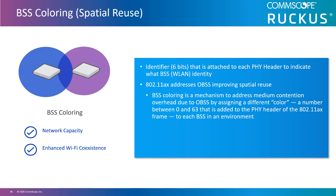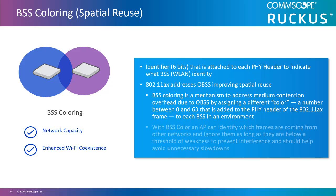This mechanism, originally introduced in 802.11ax, known as spectralization, was published in 2017 and was designed to address the medium contention overhead due to OBSS. 802.11ax assigns a different color — a number between 0 and 63 — which is added to the PHY header of the 802.11ax frame to each BSS in the environment. With BSS color, an AP can identify frames coming from other networks and ignore them as long as they are below a threshold of weakness, cutting down on the need to defer transmission and avoiding unnecessary slowdowns.